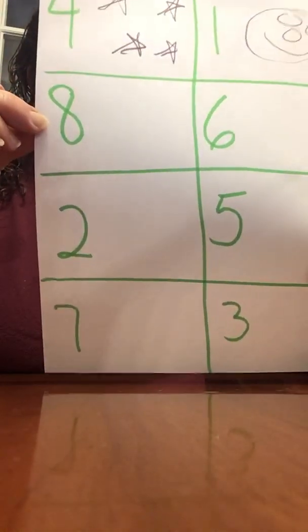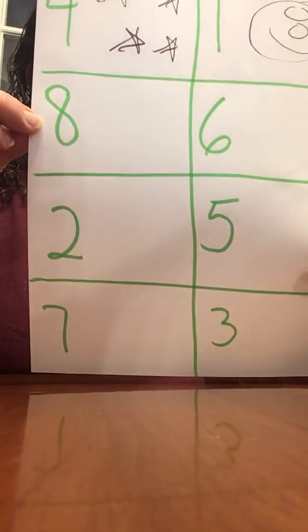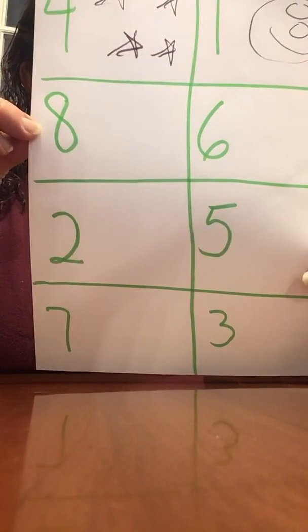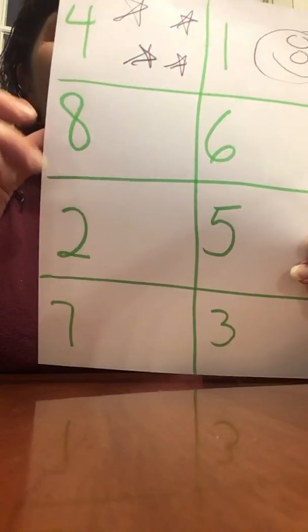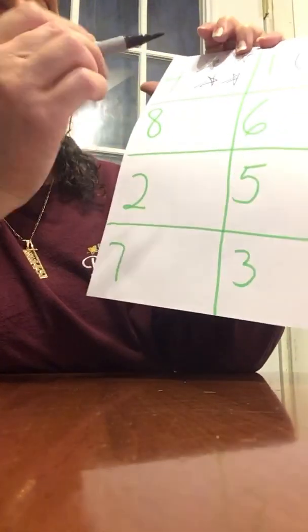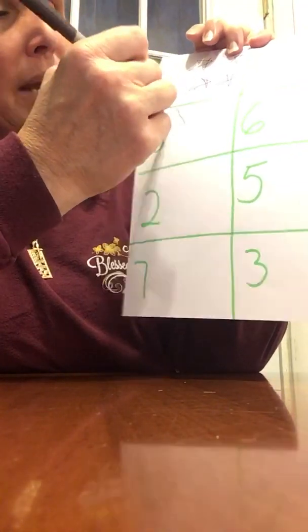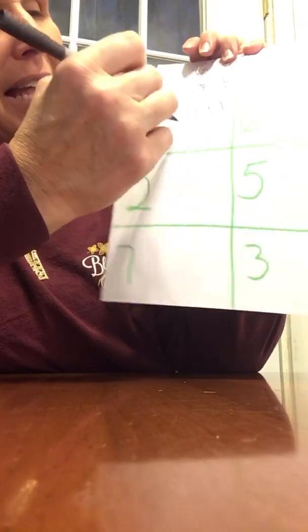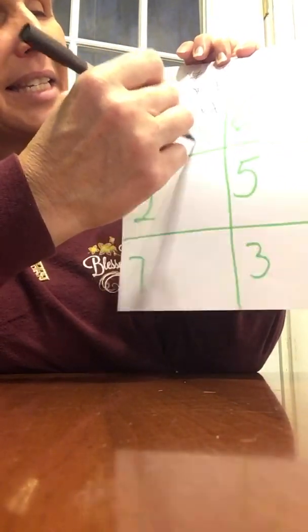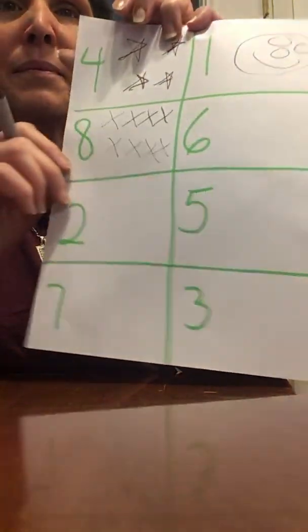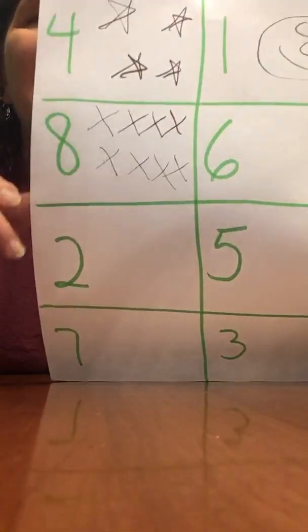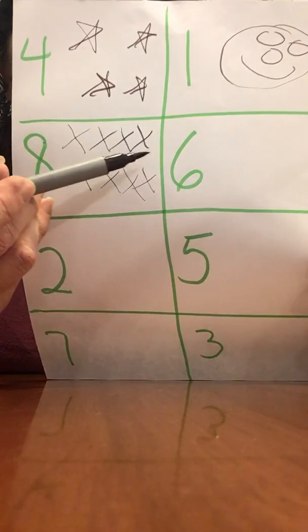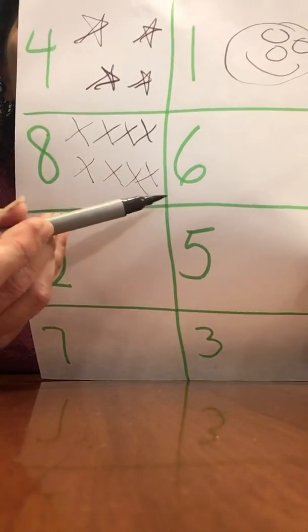What number is this? Kind of looks like a racetrack. Yes, it is crazy eight. Eight. Let's draw eight X's. One, two, three, four, five, six, seven, eight. Can you count my eight X's? Nice job.